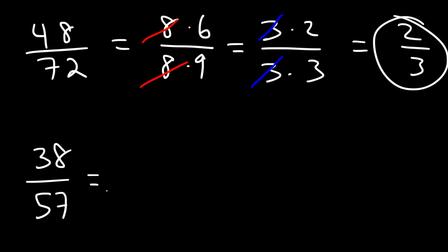Now what about 38 and 57? Both numbers are divisible by 19. 19 times 2 is 38. 19 times 3 is 57. And once again the final answer is 2 over 3.